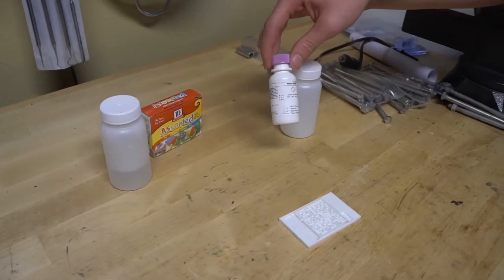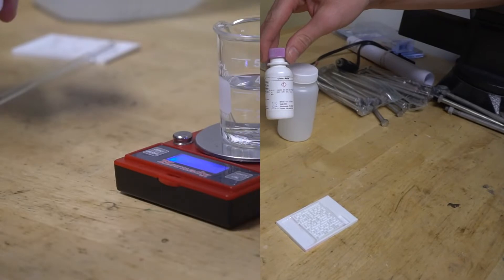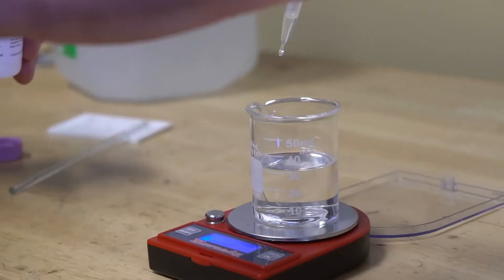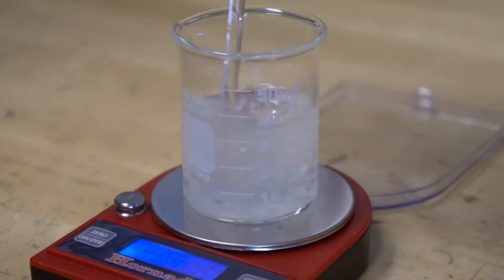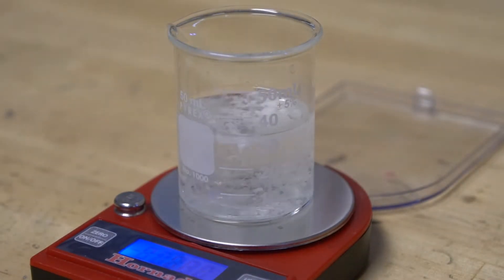Then add in your oleic acid. You don't need a lot, just need a little bit. And when we were adding the oleic acid, we did notice that it did form some solid precipitates. So if you have potassium hydroxide, we'd recommend using that, but it worked just fine with sodium hydroxide.